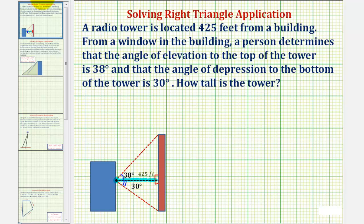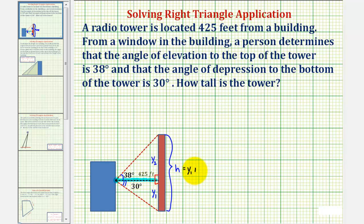Our goal is to determine the height of the tower, which would be this length here. Looking at the lower right triangle, if we label the length of this leg y sub one, and looking at the upper right triangle, if we label this leg y sub two, notice how the height of the tower would be equal to y sub one plus y sub two. Because we have two right triangles, we can use right triangle trigonometry to determine the length of y sub one and y sub two.